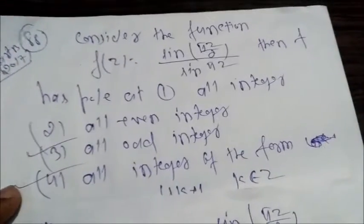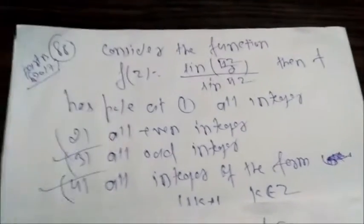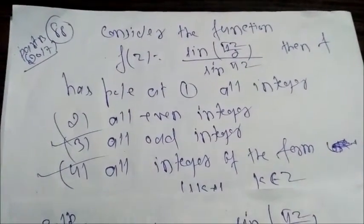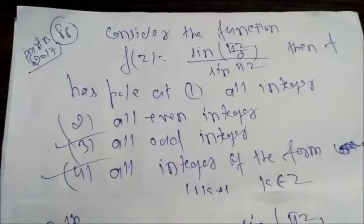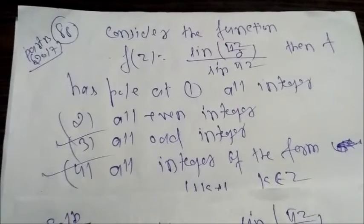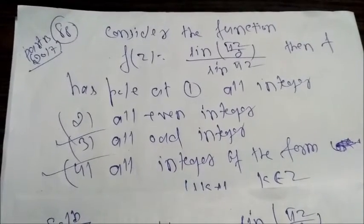Hello friends, welcome to my channel BKTutorials. Today I am going to discuss UGC net June 2017 part B question number 88. The question is: consider the function f(z) equals sin(πz/2) upon sin(πz), then f has pole at...